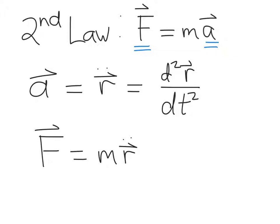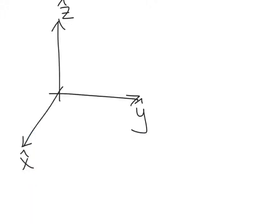We can always write any vector using essentially any coordinate system we like. One very convenient coordinate system is the Cartesian coordinate system, where we write the force vector and position vector in x, y, and z coordinates. The Cartesian coordinate system consists of x hat, y hat, and z hat basis vectors pointing in three orthogonal directions — like three rulers taped together at one end and held at right angles. Any point in three-dimensional space can be specified by giving its x, y, and z coordinate.